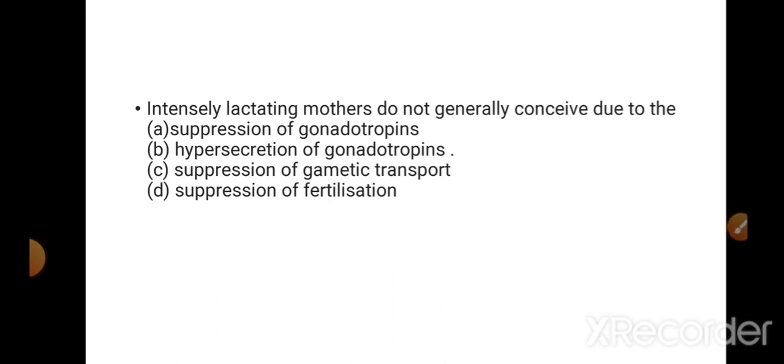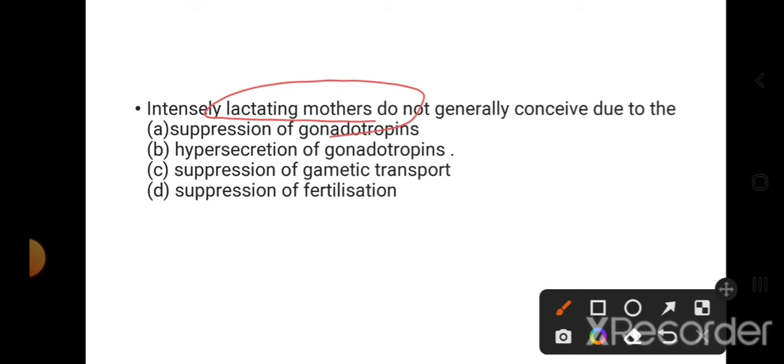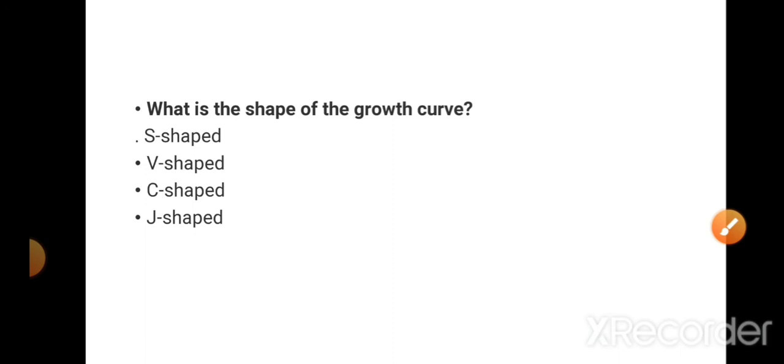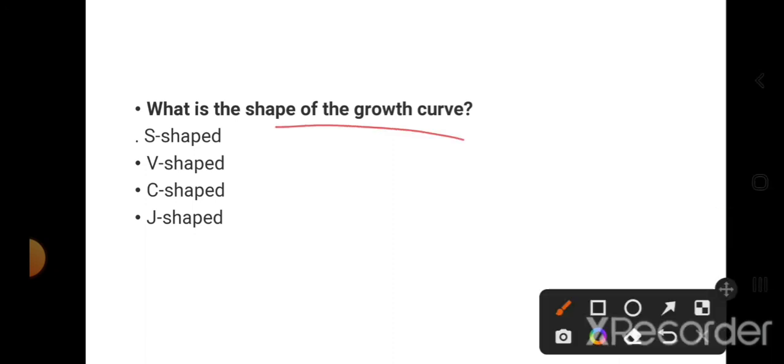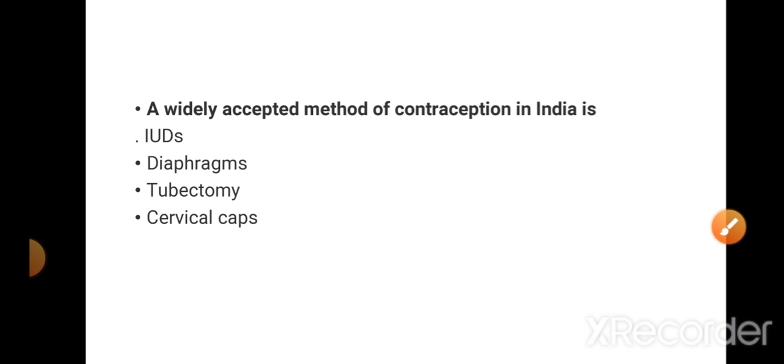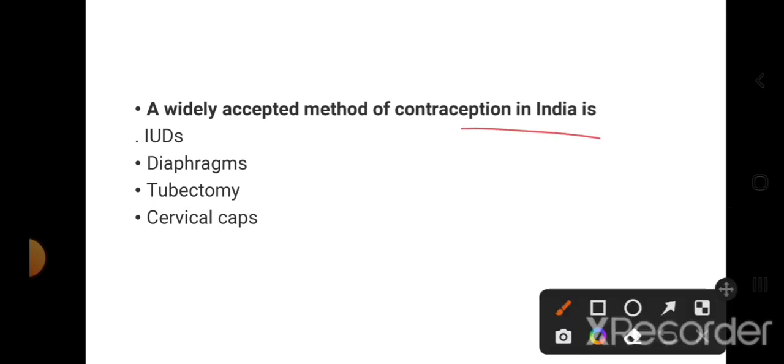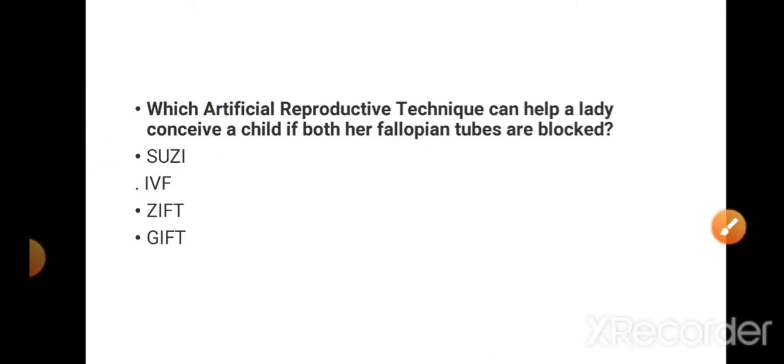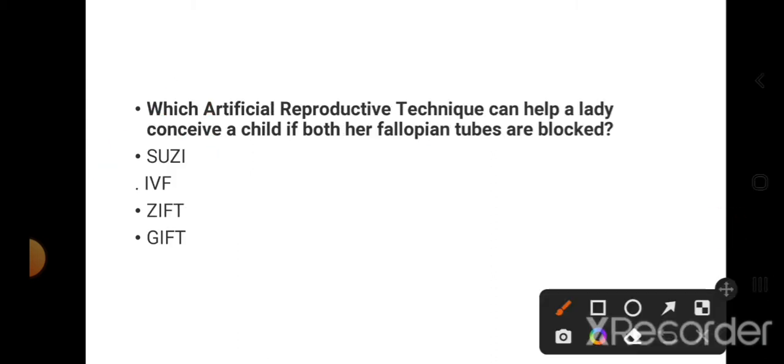Intensely lactating mothers do not generally conceive due to the suppression of gonadotropins. This is the right answer. What is the shape of the growth curve? The shape of the growth curve is S-shaped. A widely accepted method of contraception in India is IUD. Which artificial reproductive technique can help a baby conceive a child when both her fallopian tubes are blocked?